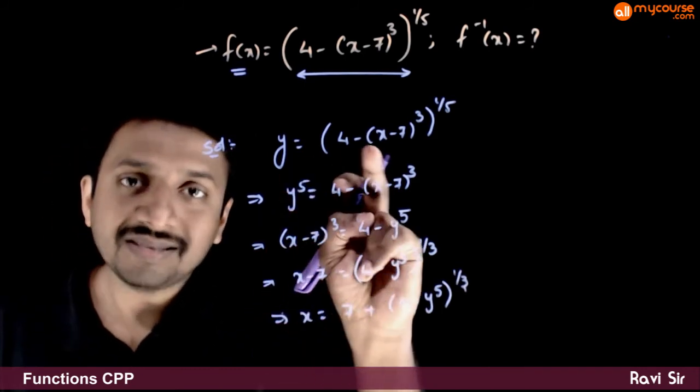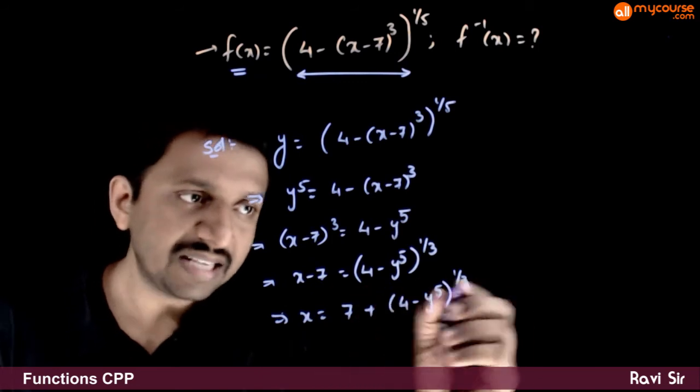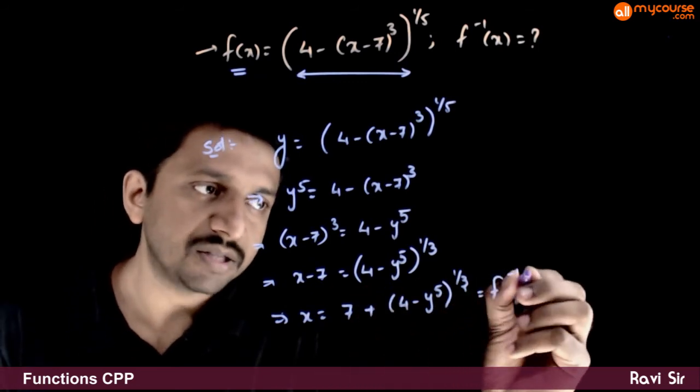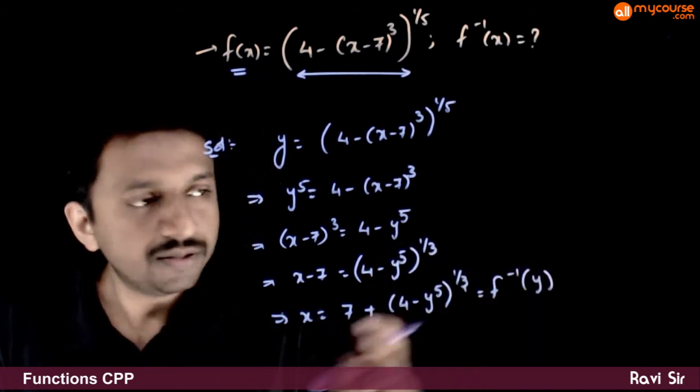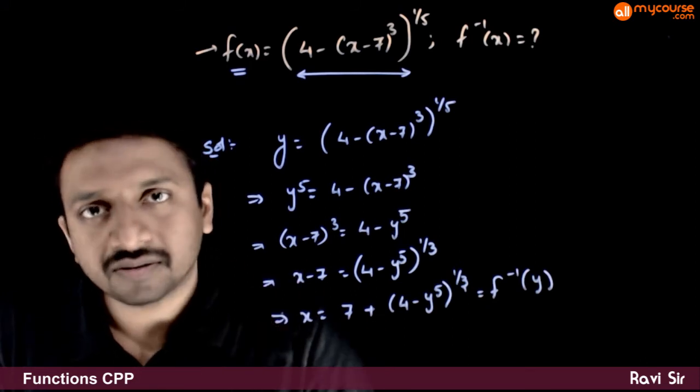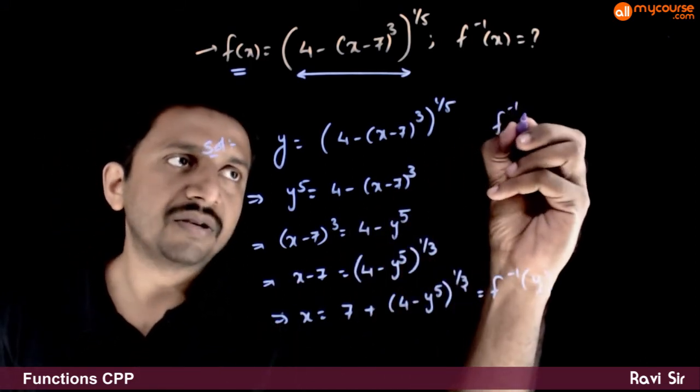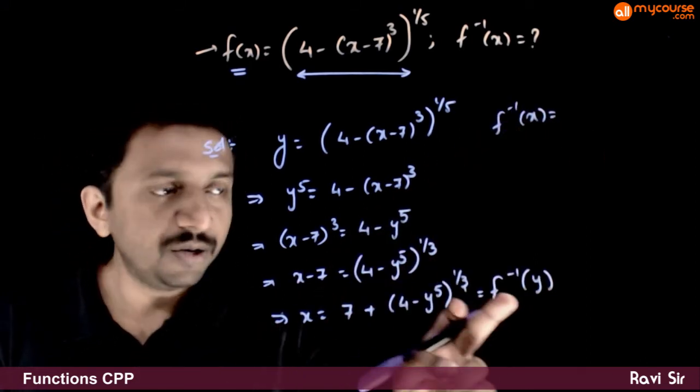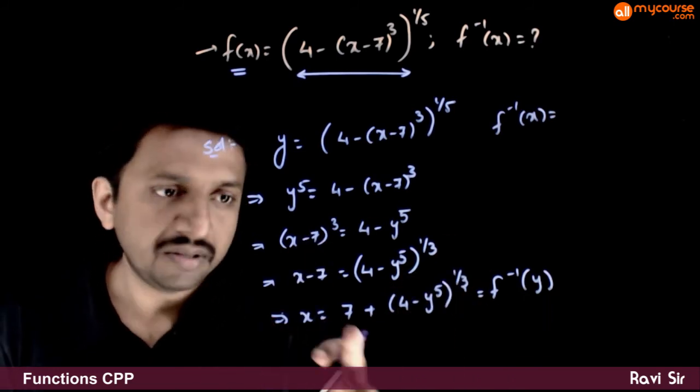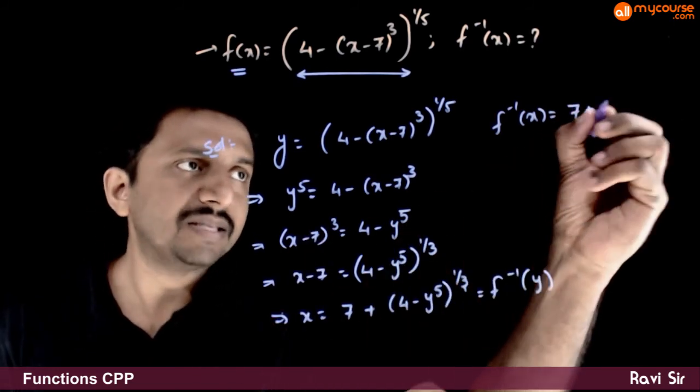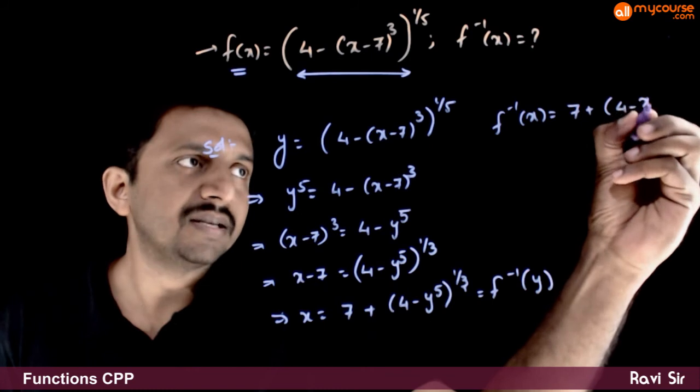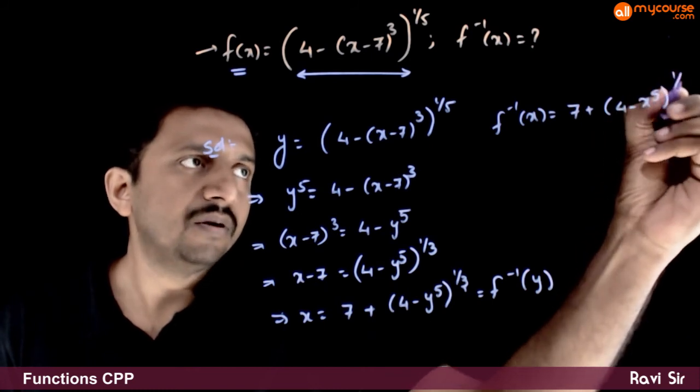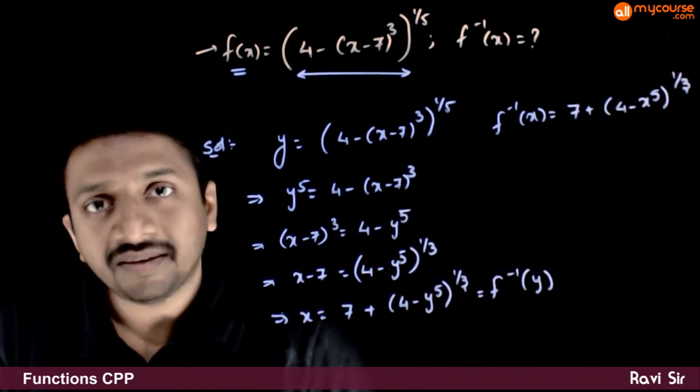So if y is equal to f of x, x will be equal to f inverse of y. So f inverse of y is this function. What is f inverse of x? You just need to put x in the place of y. It is 7 plus 4 minus x to the power 5 whole power 1 by 3 is the answer.